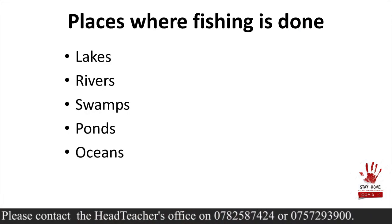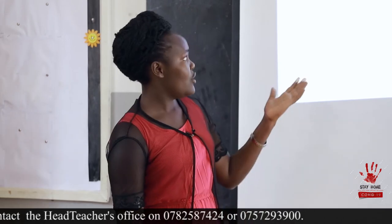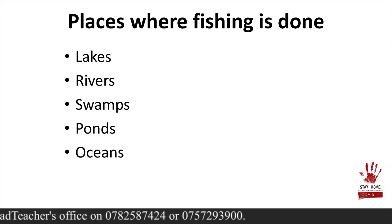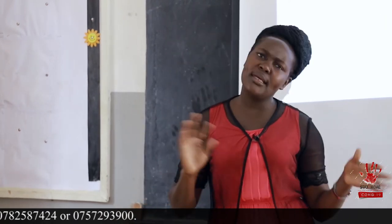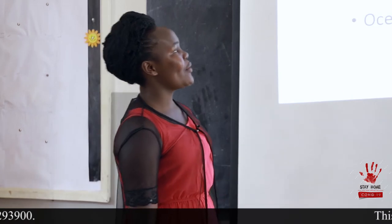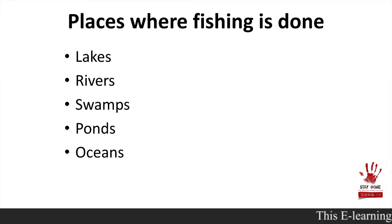Another place is ponds — some of you have ponds in your homes that you dug and started keeping fish in. Lastly, we have the oceans; within the oceans we do get fish. So in these different places, there are different types of fish that are caught. I know many of you have started thinking we should start keeping fish — it is possible, you can create a pond in your home. Unfortunately, you can't create a lake, a river, or an ocean, but a pond is very possible.